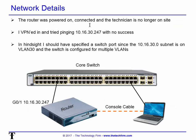So the router is powered on and connected, and the technician is no longer on site. I VPN'd into the office and tried pinging that IP — no success. In hindsight, I should have specified the switch port, because this switch, like most switches in most companies, has different VLANs. I should have told him to plug into port X — he probably just picked the first most convenient port and plugged in.